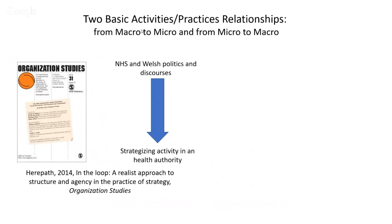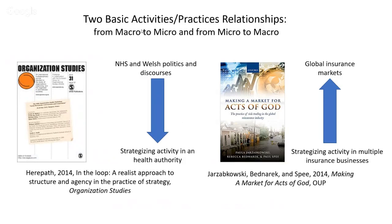Paula Jarzakowska and colleagues take a slightly different perspective — starting at the micro level. In their book Making a Market for Acts of God, they show how global insurance markets and their practices are enacted constantly through activity in local situations all around the world, from Bermuda to Pakistan to London, through the local activity of particular individuals and groups. What they're showing is that global insurance market practices, working around the world, are created in local strategizing activity in many locations within insurance businesses scattered globally. The relationship between activities and practices moves from micro to macro — a kind of upward movement.